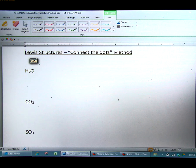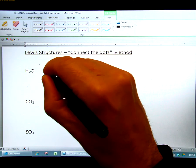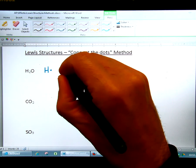In this video, we're going to be learning how to draw Lewis structures using the connect-the-dot method. With this method, you'd write each element, an atom of each element, with the correct number of valence electrons that it has.